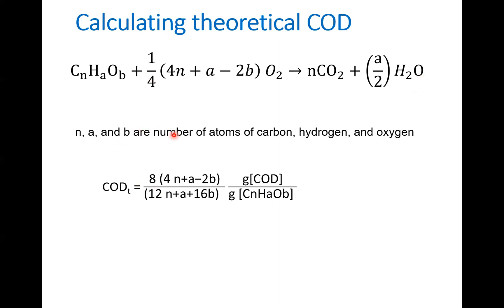We simplified this to a balanced equation giving milligrams of COD per gram of organic matter. You divide the moles of oxygen by the molecular weight of the material. The factor of 8 comes from multiplying the moles by 32 — the molecular weight of oxygen.